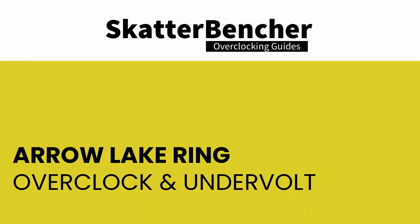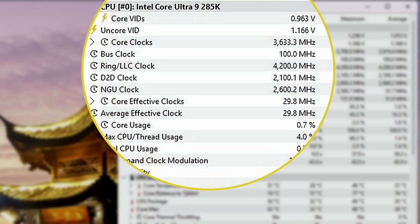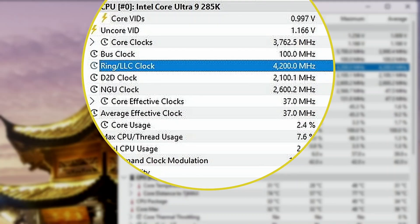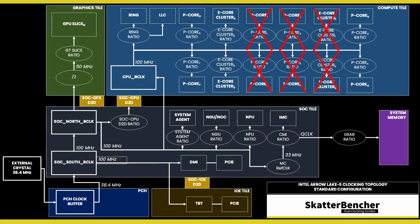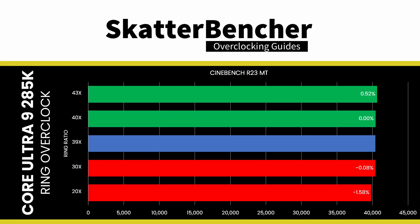The overclocking potential of the ring is very limited. At default voltage, you can increase a couple of bins at best on the Core Ultra 9285K to maybe 4.2 GHz. The overclocking range is a little bit better on the Core Ultra 5245K due to the missing middle P-Cores. The good news is that the ring frequency has barely any impact on performance — changing from 4 GHz to 2 GHz only decreases Cinebench R23 multi-thread performance by less than 1.5%. So the lack of overclocking headroom doesn't impact the maximum performance potential.